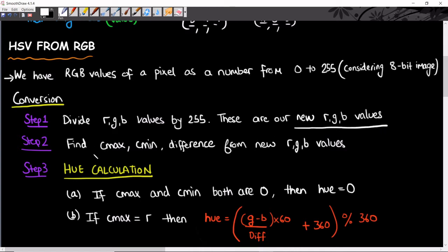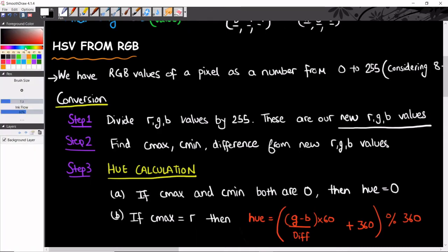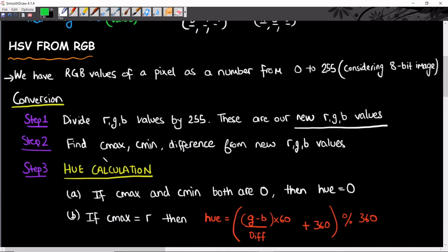Next up, I'm going to find three values: C max, C min, and difference from my RGB values. C max is the maximum of my RGB values, C min is the minimum, and difference is C max minus C min.